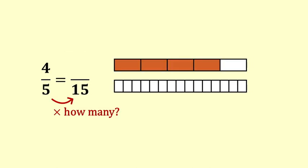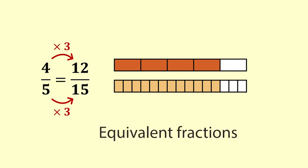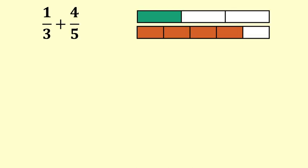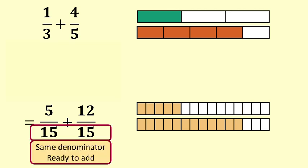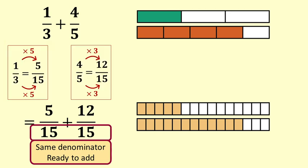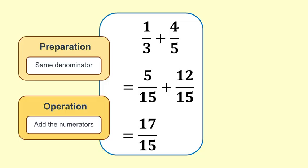How many fives in 15? There are three fives in 15. To convert fifths to fifteenths we multiply the bottom by 3, and to keep the amount the same we also multiply the top by 3. You can see in the bar diagram that 12 fifteenths is the same quantity as 4 fifths — they are equivalent fractions. So 1 third plus 4 fifths equals 5 fifteenths plus 12 fifteenths. That is the end of step one — both fractions have the same denominator, ready for step two. Pause to make sure you understand each of the steps.